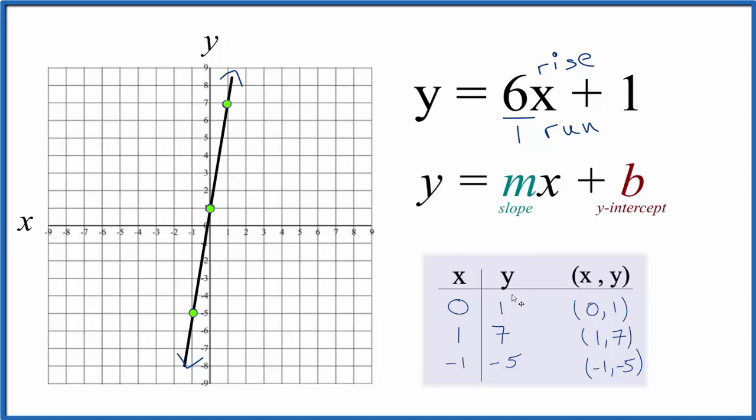So this shows that we did the first part correctly, and that this is the graph for the linear equation, y equals 6x plus 1. This is Dr. B, and thanks for watching.